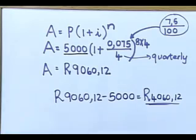Invest and save, everybody. Just to recap: quarterly — I divided my interest rate by four and multiplied my years by four. If it was monthly, divide by 12 and times your years by 12. Semi-annually, another word for which is half-yearly — take your interest rate, divide by two, and take your years and multiply by two.